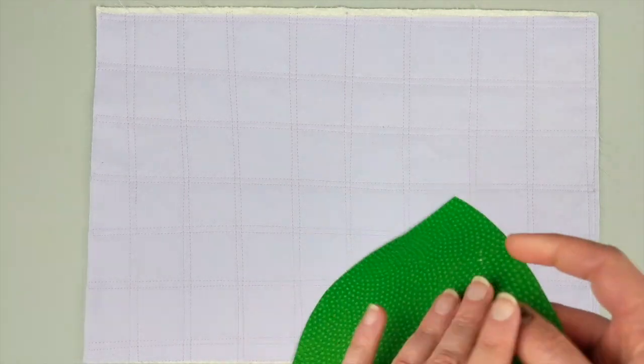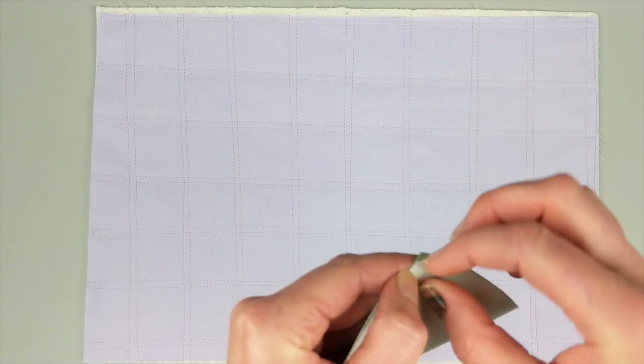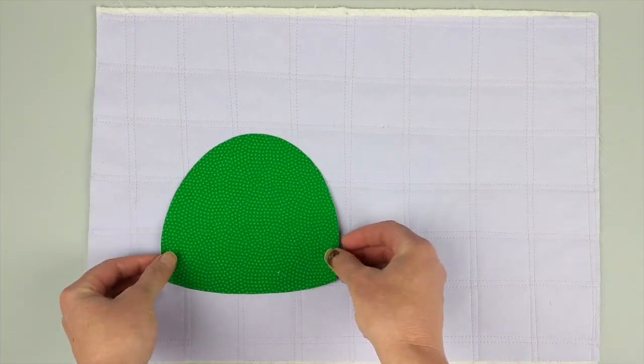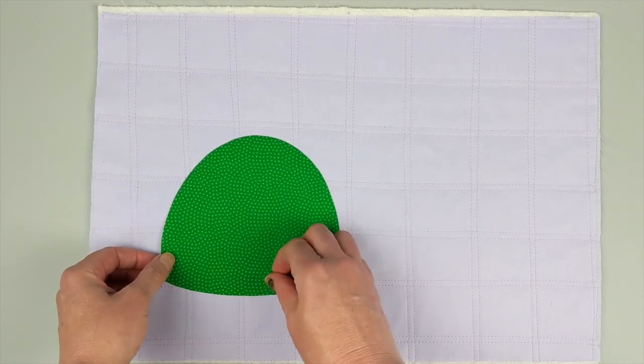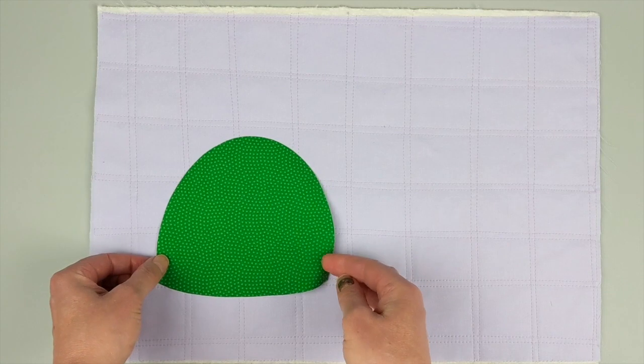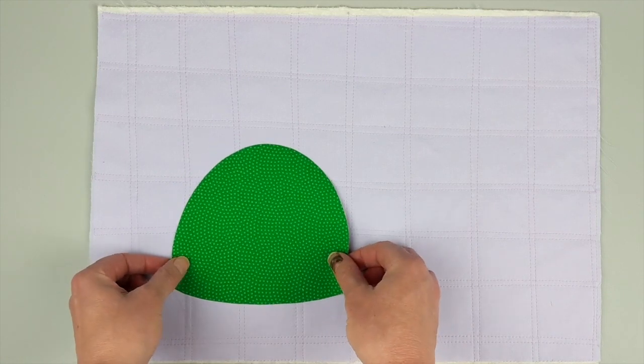I'm going to start laying these pieces out, and I like to start with the main piece, and in this case that's the shell. So you just peel off that paper backing.